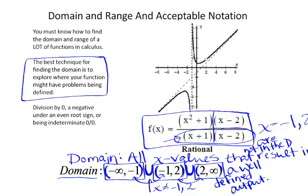Note that zero over zero is not simply dividing by zero — that's trying to divide zero by zero, which is not undefined but indeterminate. We will work with indeterminate forms of rational functions a great deal, so you will see that again.